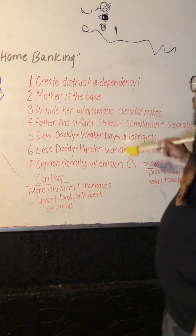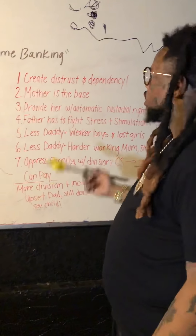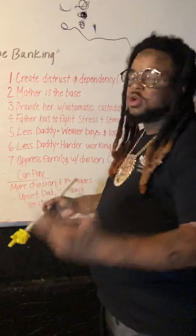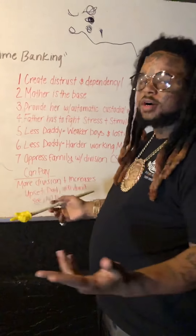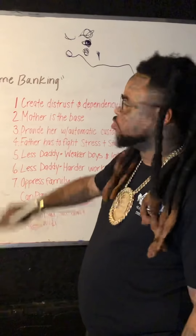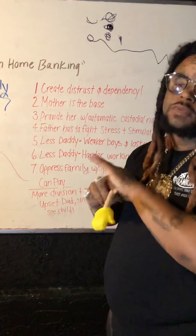Number two, the mother is typically the base of the family by default because the system is created that way. If y'all break up, unless you can prove she's unfit or you have something to show otherwise, children are typically gonna go with the mom. Number three: provide her with automatic custodial rights. This creates distrust before the baby even gets here. A lot of people are currently in dead-end, terrible relationships for the sake of the children because they don't want to deal with this system.